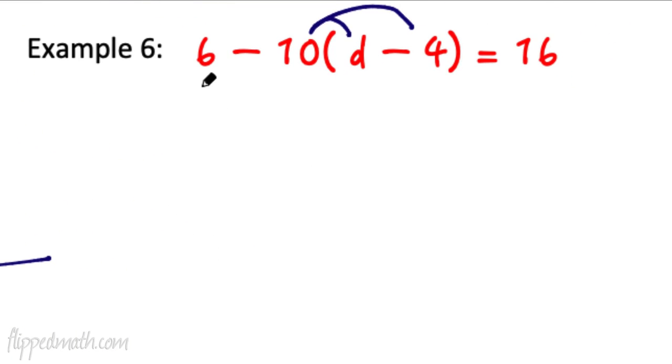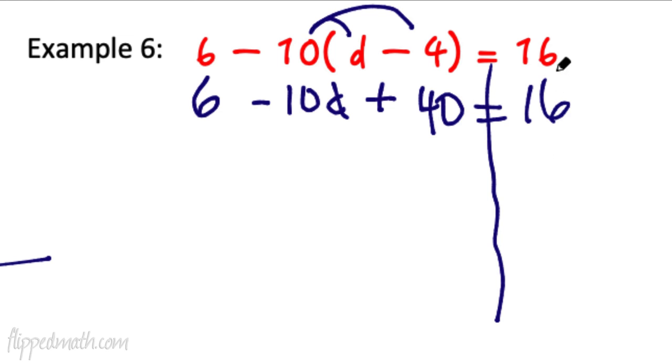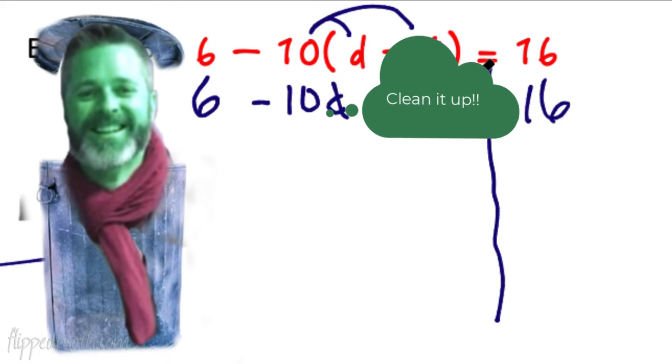Let's do multiplication. We have to do the distributive property. So that 6 is going to chill. Chill out. Now we have like a negative 10 times D. That is negative 10D. And then we have a negative 10 times a negative 4. I know they're minuses. It might be playing with your head. But you think of it like a negative 10 times a negative 4. That is a positive 40. We're going to keep that line like we always do. This is all going to equal 16.